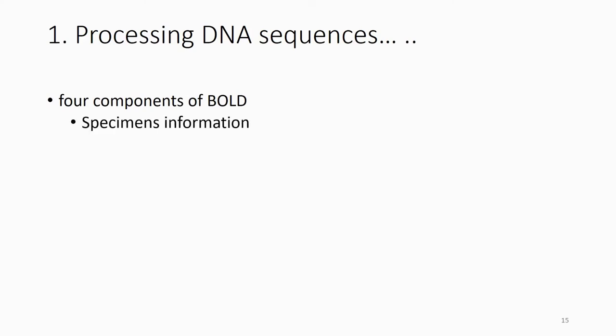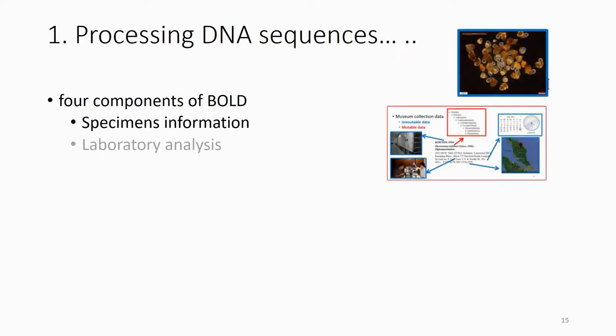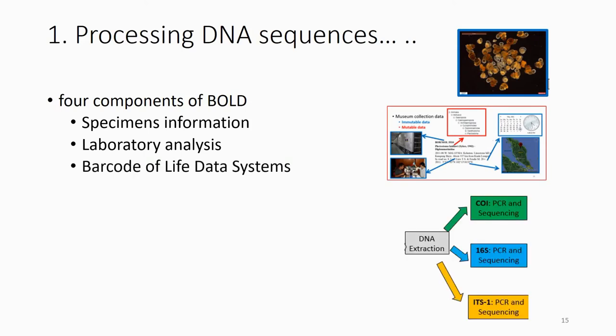I want you to identify when you watch the video of the Barcoding of Life database. There are four components in the database: one is specimen information, another is laboratory analysis — which means they also keep the protocol and PCR primers used. They also have a Barcoding of Life data system, so it's not only keeping a database, but you can also use it as a database to check your sequences.